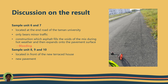Sample units 6 and 7 are located at the end road of Taman University, connected to a new residential area, and the road bears only minor traffic since it is used by some new terrace house residents. Bleeding is found in sample unit 6, which may be caused by construction where excess binder fills the voids of the mix during hot weather and then expands on the pavement surface. Sample units 8, 9, and 10 are in good condition because they are new pavement located in front of the new terrace houses.